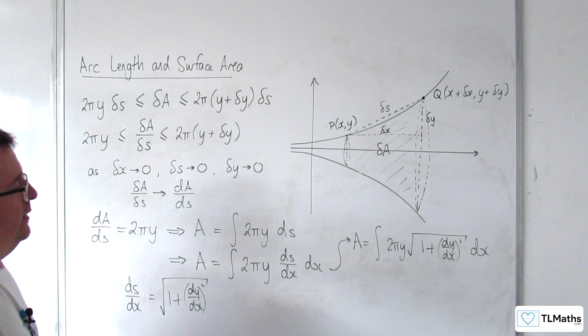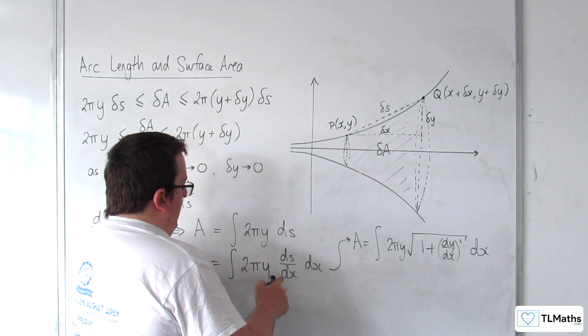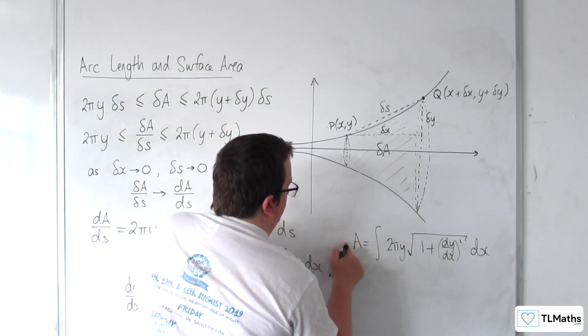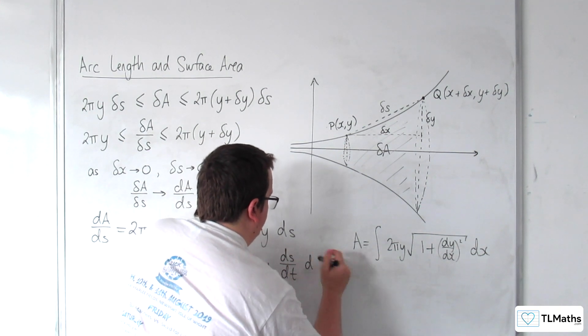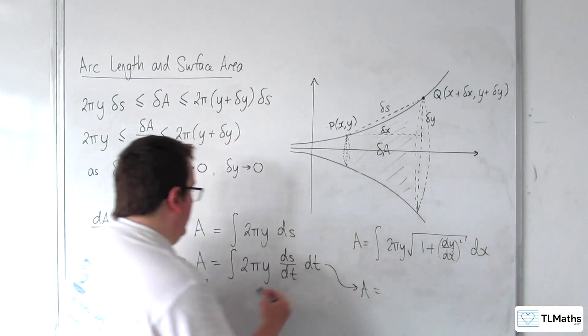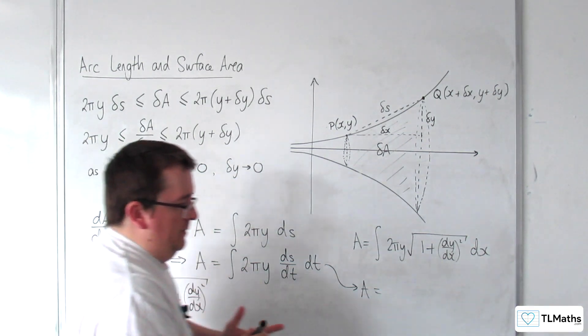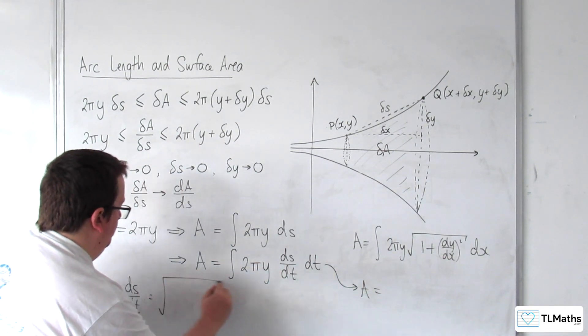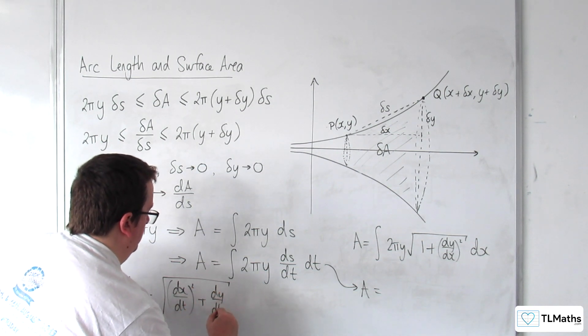If instead we were working in parametric form, then at this stage what I could have done is instead of introducing dx here, I could also have done dt. So I could have written this as dS/dt dt. And then dS/dt was equal to the integral of (dx/dt)² plus (dy/dt)².